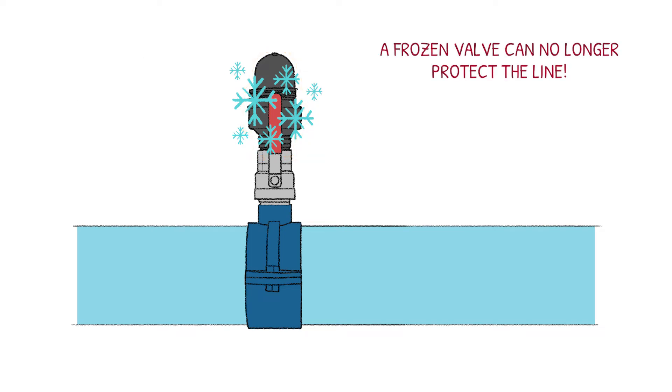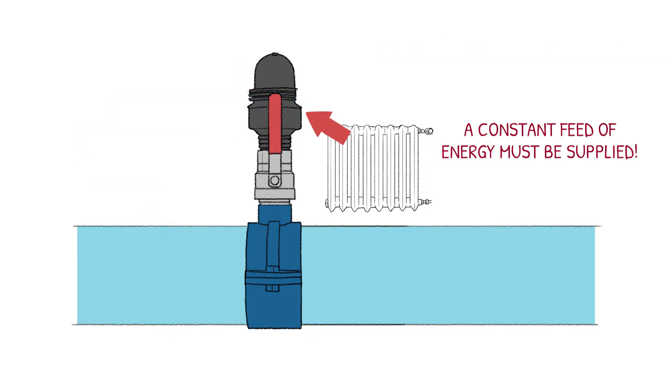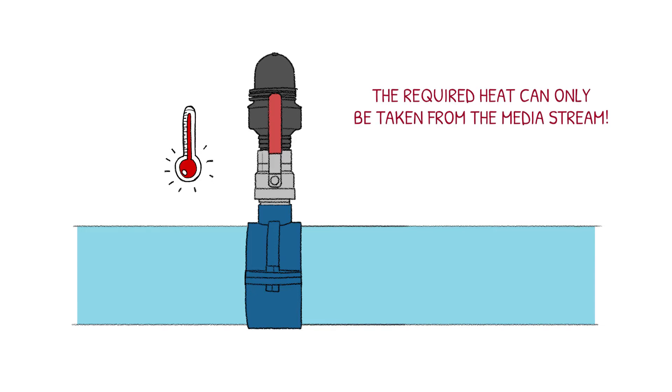A frozen valve can no longer protect your line, thus a constant feed of energy must be supplied to prevent icing. Since in most cases no external energy is available, the required heat can only be taken from the media stream.